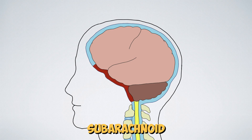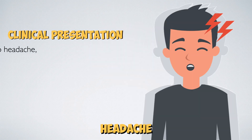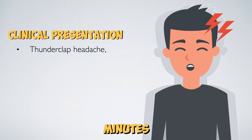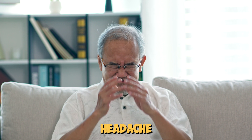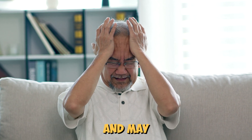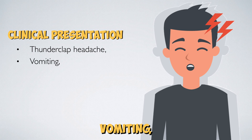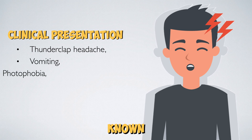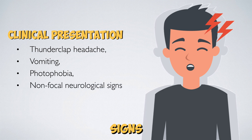Acute bleeding into the subarachnoid space results in a thunderclap headache that peaks within minutes and has a duration greater than one hour. This is usually described as the worst headache a person has ever experienced, and may be accompanied by symptoms that include vomiting, sensitivity to light known as photophobia, and non-focal neurological signs like reduced level of consciousness.